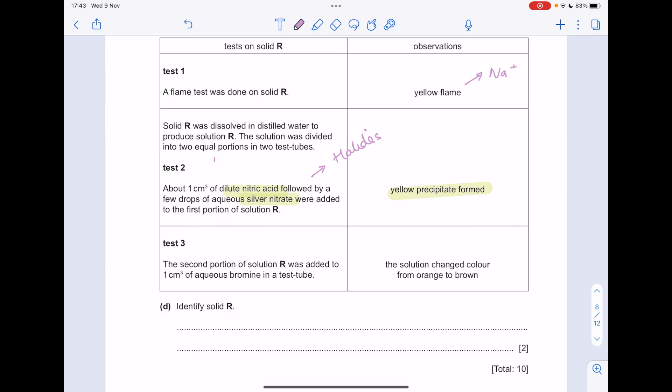And remember they go white, cream, yellow precipitates based on if it's chloride, bromide or iodide ions. Because we've got yellow, it means it's iodide.